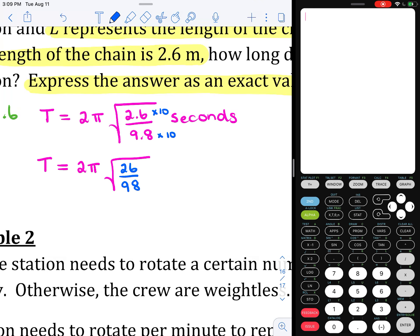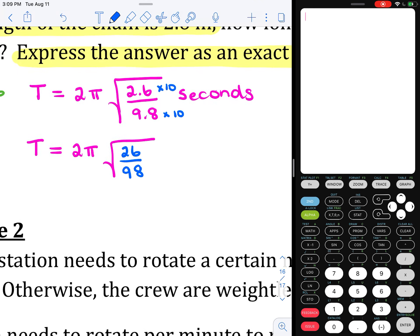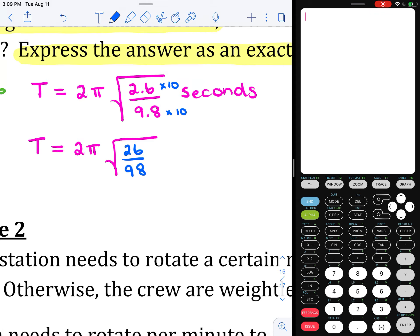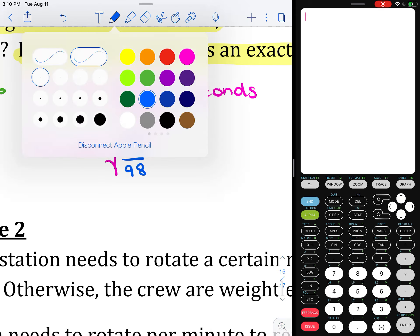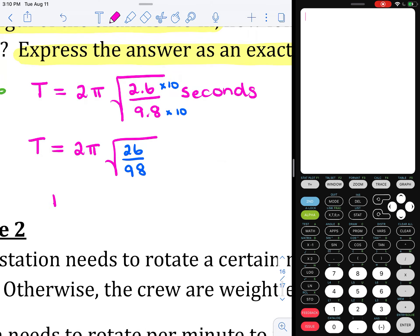Now, 26 over 98, can we reduce that? What can you divide into both top and bottom? Well, both 26 and 98 are divisible by 2. This is going to be T equals 2π times the square root of—if I divide top and bottom by 2—that will be 13 over 49.